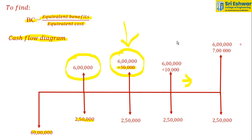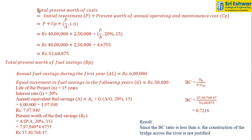Total present worth of cost is equal to initial investment plus present worth of annual operating and maintenance cost: P plus C_p × (P/A, i, n). The factor (P/A, 20%, 15) is found from the data book and equals 4.6755. So the total present worth of cost is Rs. 51,68,875.